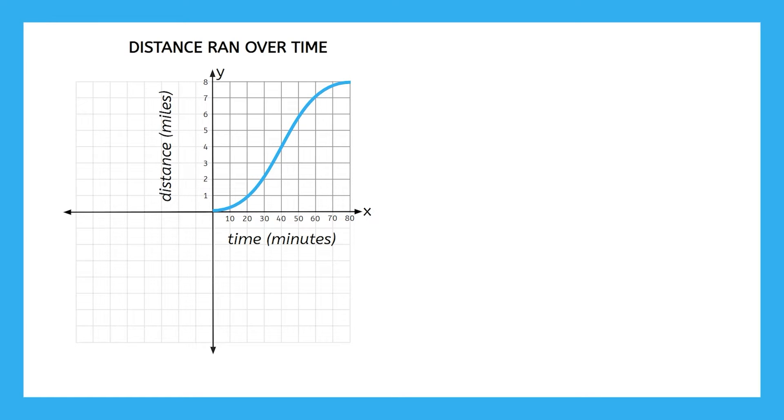Functions like this are called continuous functions. Their graphs will consist of a single unbroken line or curve like you see here.